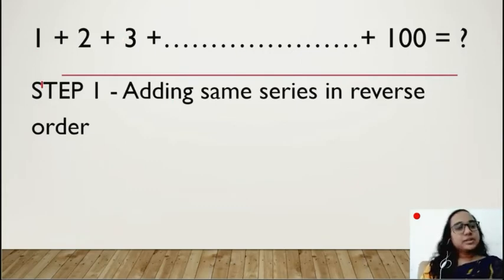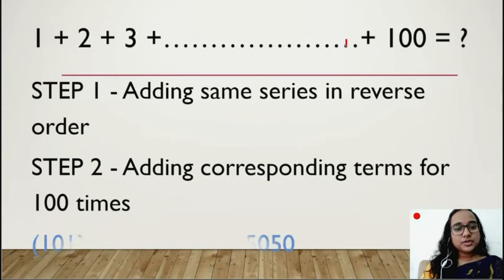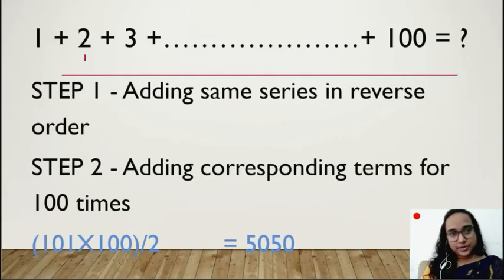After that, I will add corresponding terms. Now, how many times do we need to add? We need to add 100 times because we have 100 terms in the series. So when I am going to add that, what will we get? That is 101. 1 plus 100 is 101, 2 plus 99 is 101, 3 plus 98 is 101. So we are multiplying 101 by 100 and we will divide it by 2 because we need only one series. So we will get 5050. That is 5050.